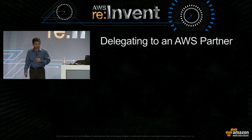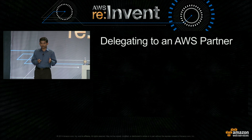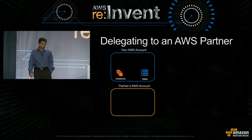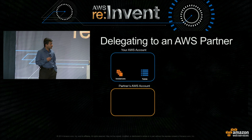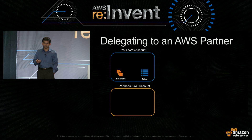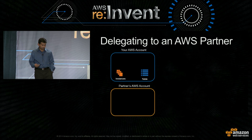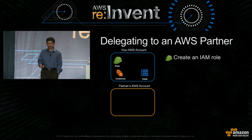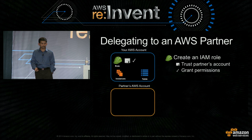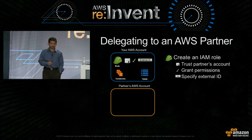Now this is the second use case for the second scenario: delegation across account. I have an account and I want a partner to access my account because I'm using the partner's offering. The way to do that is by creating a role in your account, trusting the partner's account, granting permissions, and using something called an external ID — and I will get to it in a minute.